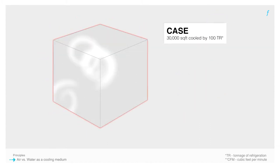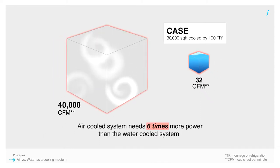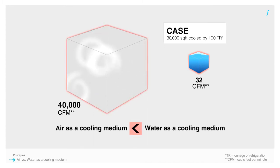Sample this: to provide 100 T-R worth of cooling, one would need 40,000 CFM of air compared to just 32 CFM of water. Moreover, the air-cooled system would need 6 times more power than the water-cooled system. Clearly, water is a much more potent cooling medium and cooling by water is much more efficient than cooling by air.